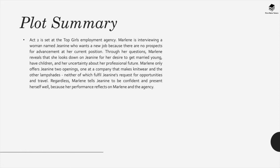Act 2 is set at the Top Girls Employment Agency. Marlene is interviewing a woman named Janine who wants a new job because there are no prospects for advancement at her current position. Through her questions, Marlene reveals that she looks down on Janine for her desire to get married young, have children, and her uncertainty about her professional future. Marlene only offers Janine two openings — one at a company that makes knitwear and the other lampshades — neither of which fulfill Janine's request for opportunities and travel. Regardless, Marlene tells Janine to be confident and present herself well because her performance reflects on Marlene and the agency.